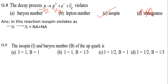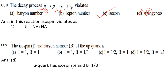Question 9: What is the isospin and baryon number of the up quark? For up quark, down quark, or strange quark, the baryon number is always 1/3. For the up quark, isospin is ½. So the correct option is D: isospin = ½, baryon number = 1/3.